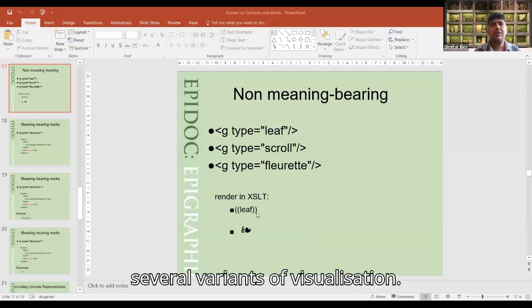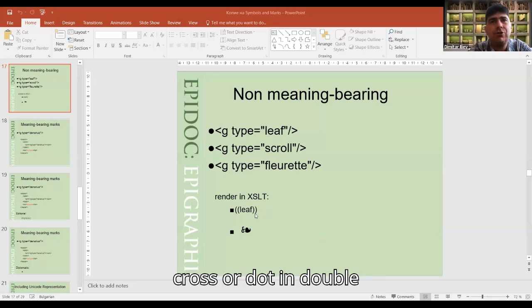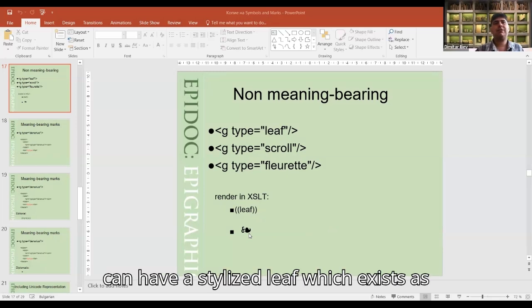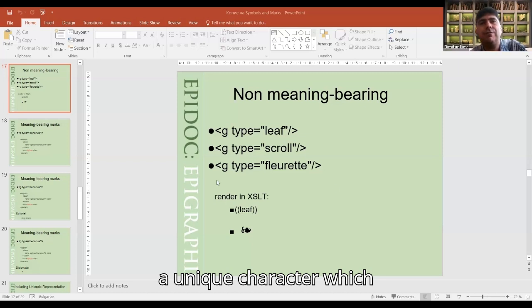You can have leaves, the leaf or cross or dot in double round brackets, or in some visualization scenarios you can have a stylized leaf which exists as a unique character which visualizes the leaf or the cross.